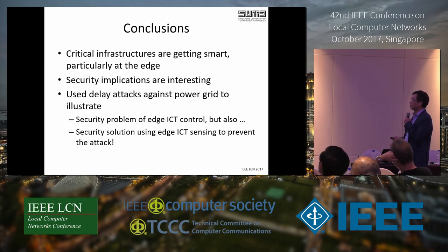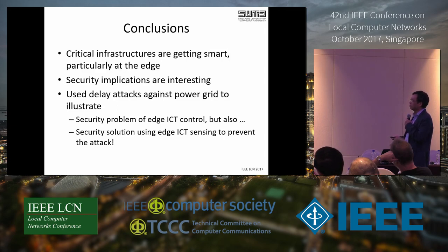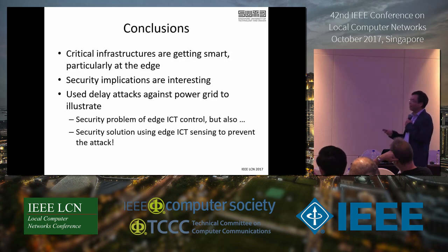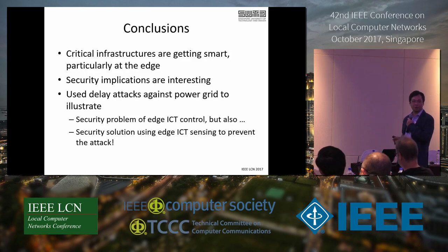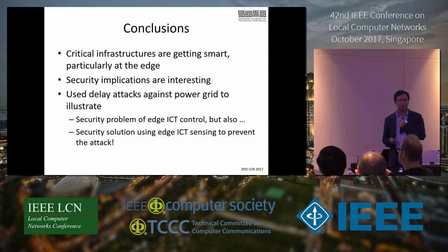In conclusion, critical infrastructure is getting smarter at the edge. Security implications are important. We used the delay attack against the grid to illustrate how subverting ICT control causes instability, and identified time synchronization infrastructure as a key vulnerability. We then used edge ICT sensing — specifically the electrical network frequency — to provide a synchronization infrastructure that is more credible and trustworthy than current approaches. Thank you, and I'm happy to take questions.